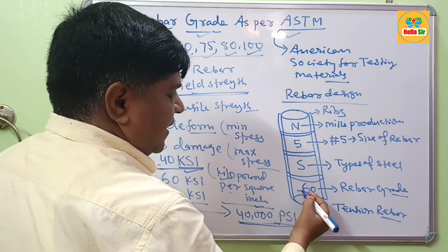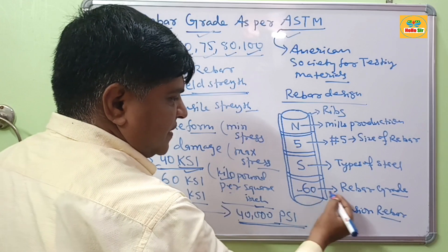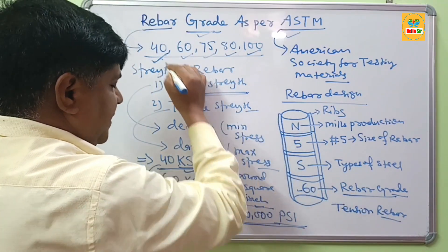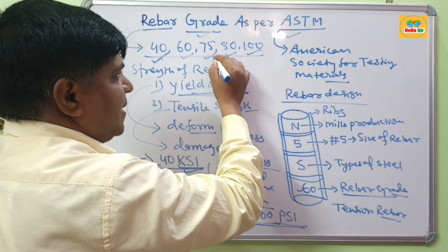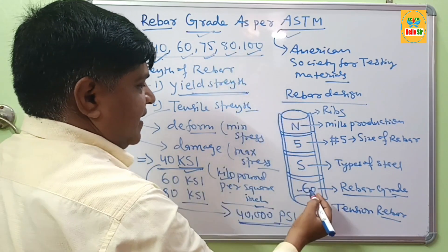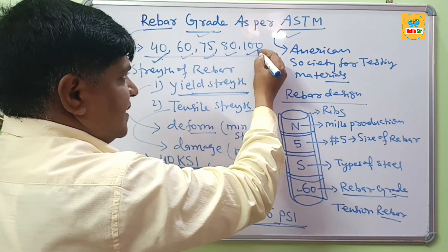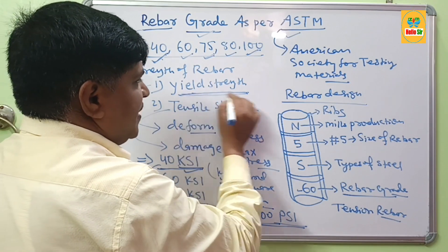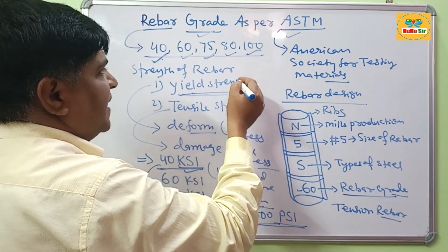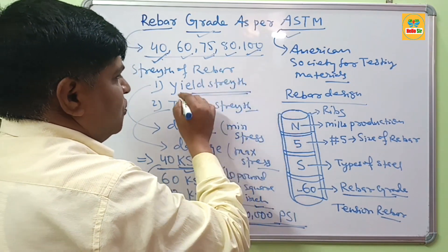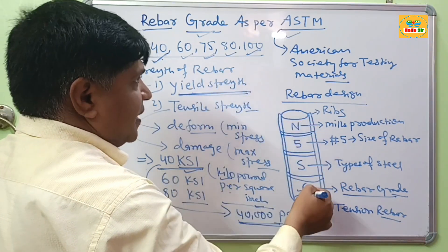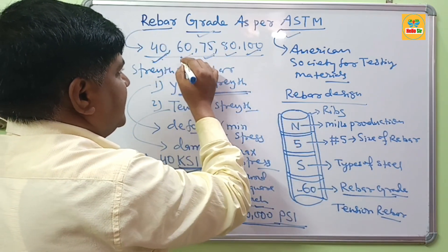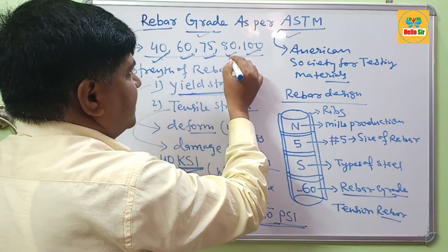The fourth marking on the rebar indicates the rebar grade — it may be 40 KSI, 60 KSI, 75 KSI, 80 KSI, or 100 KSI. According to the minimum yield strength of the rebar, the rebar grade is determined accordingly. Thank you.